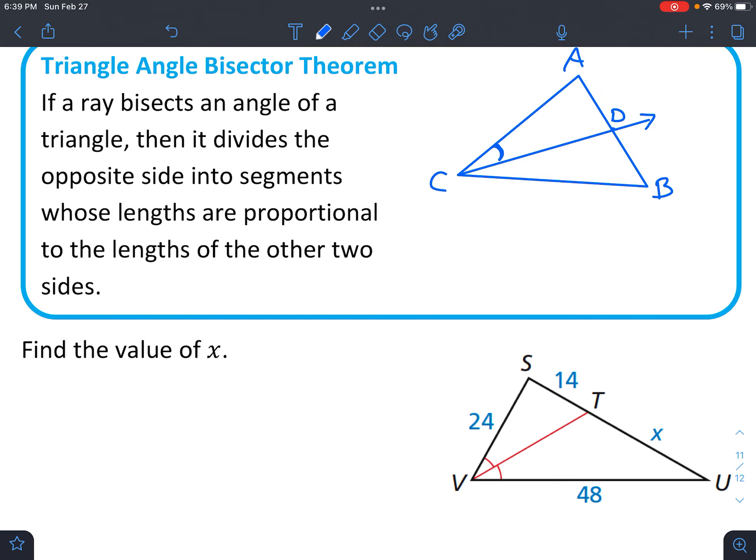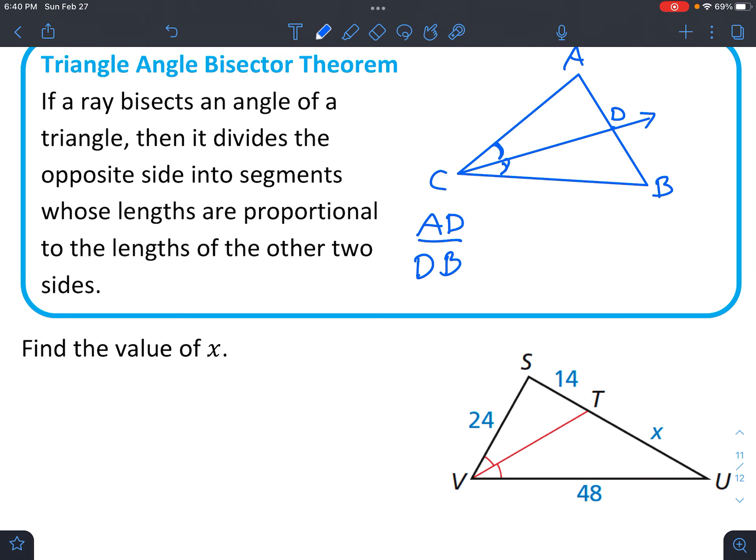And what we're given is that since the ray bisects the angle, we know that this angle is congruent to this angle. It says then it divides the opposite sides into segments whose lengths are proportional to the lengths of the other two sides. So let's look at what that means. Which really means that when you compare AD to DB. So AD is right here. DB is right here. And that compares the same way to CA over CB. CA is here, and then CB is here. So it's like take the two sides where they're being divided, right? Compare those, and then you want to compare these sides. They're adjacent to them, just in the same order.